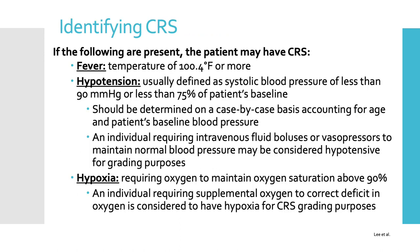Now we'll cover how to identify CRS. The main things we look for are fever, hypotension, and hypoxia. A fever is defined as a temperature of 100.4 degrees Fahrenheit or more. Hypotension is typically defined as a systolic blood pressure of less than 90 or less than 75% of a patient's baseline, determined on a case-by-case basis accounting for age and the patient's baseline. Hypoxia is defined as a patient requiring oxygen to maintain oxygen saturation above 90%. If a patient has any or multiple of these, they may have CRS.